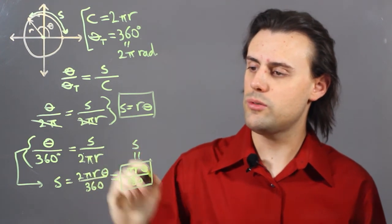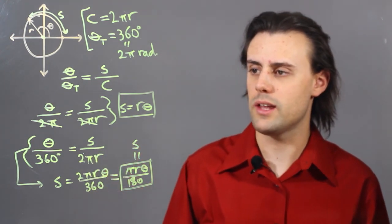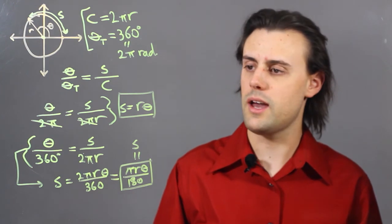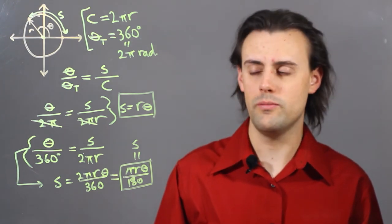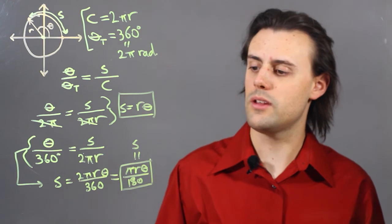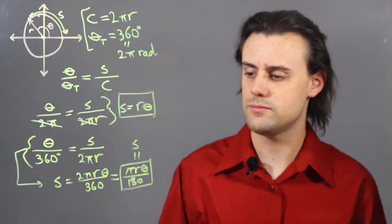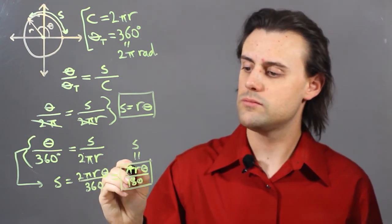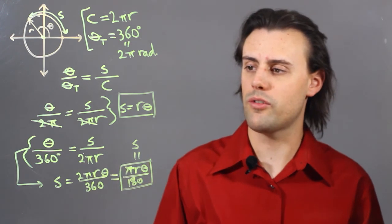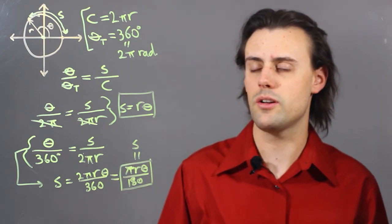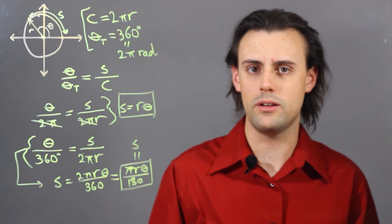So these are two equivalent expressions that relate the arc length and the central angle, one in terms of radians, and the other in terms of degrees. So given one piece of information, one can calculate the other using one of these two equivalent expressions.